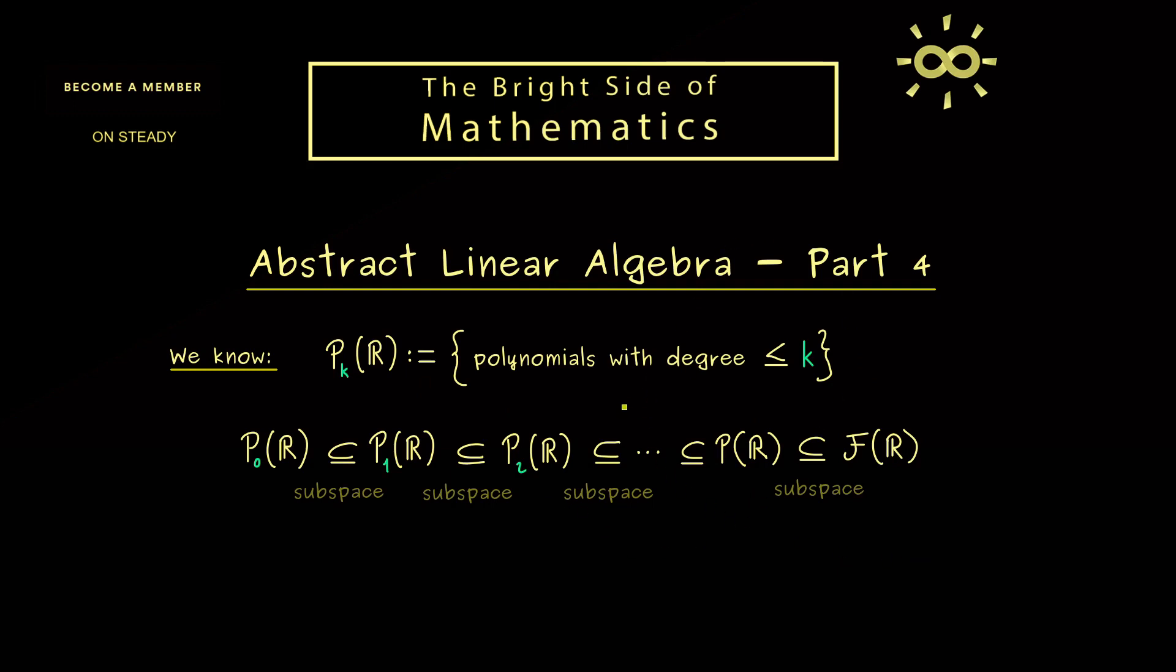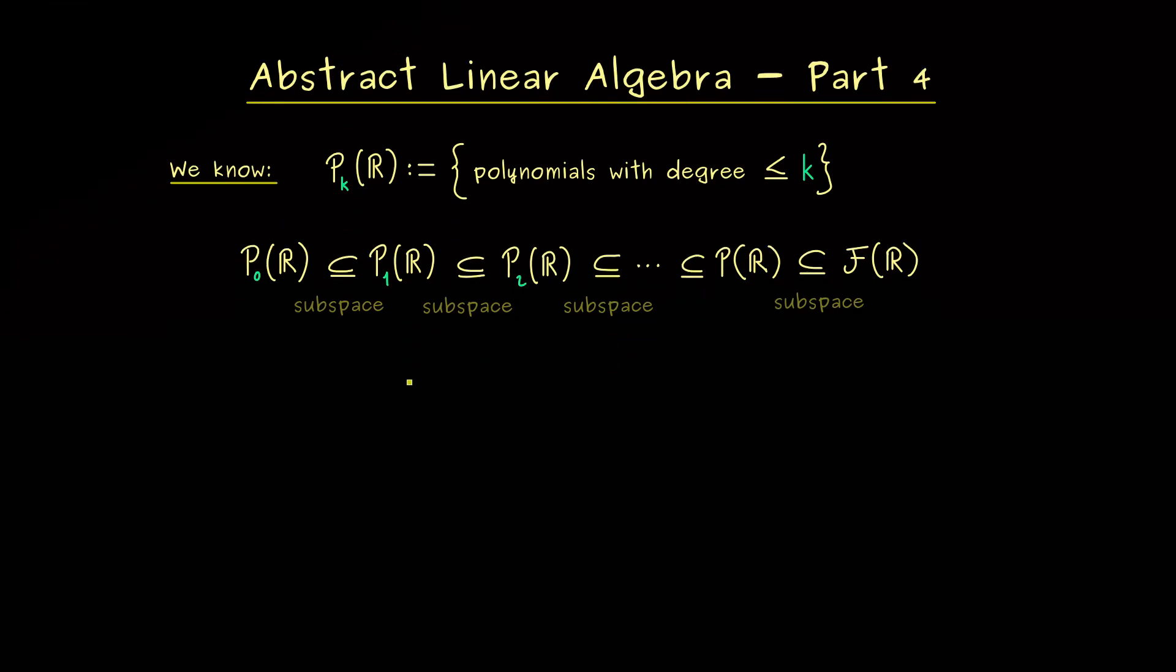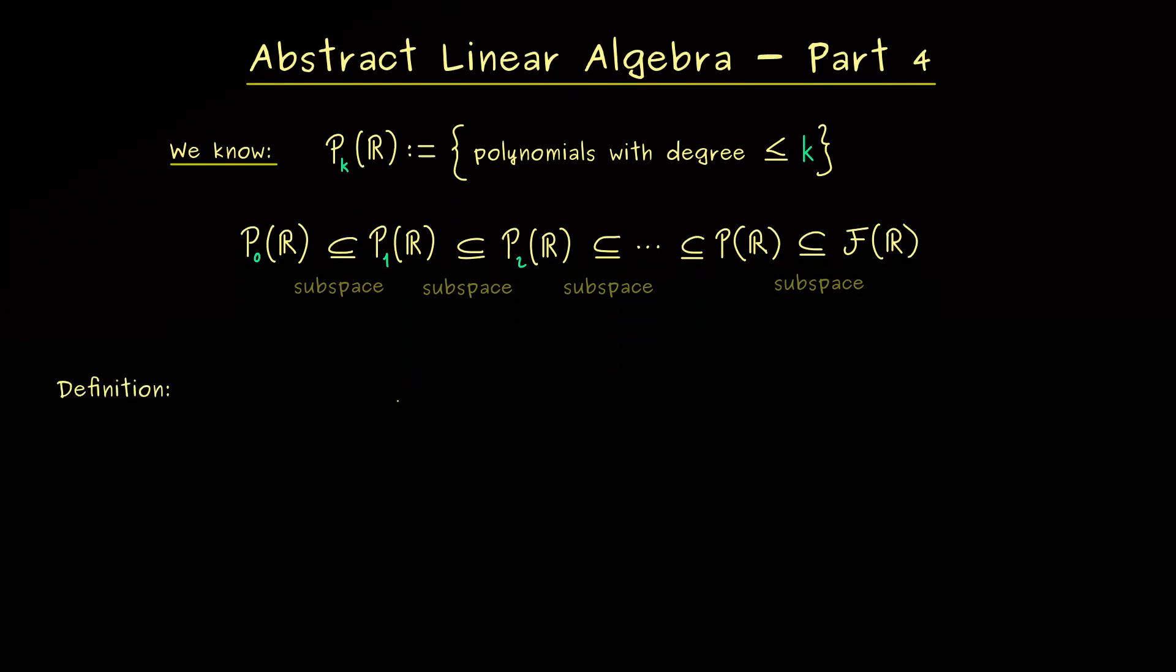We will just extend some definitions we already know from linear algebra. In fact they will look more or less the same. We just have to put them into this abstract setting now. So instead of R^n or C^n we now consider a general F vector space V.